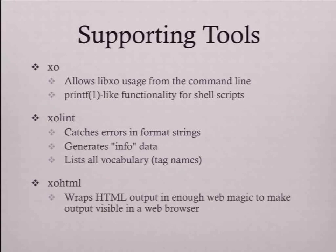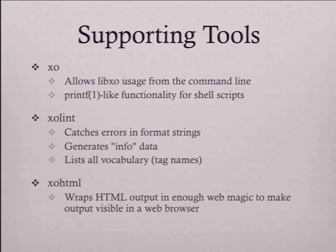XO_lint is a Perl script that looks at your source code and tries to find errors - flags that don't go together, contents that don't make sense. It can also generate the info data and a list of all the tag names used in your program. Pipe that through sort to see what you misspelled.